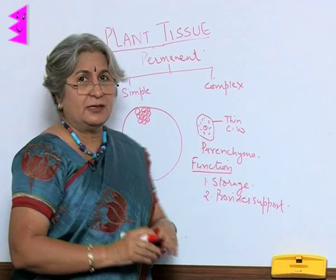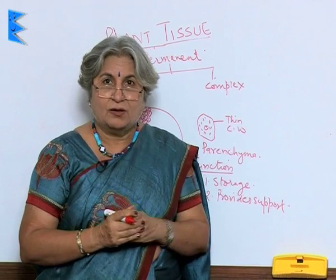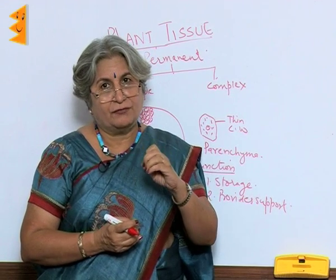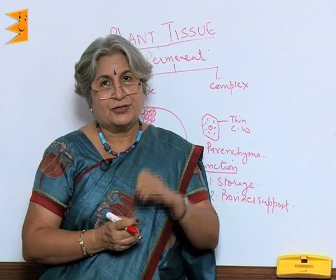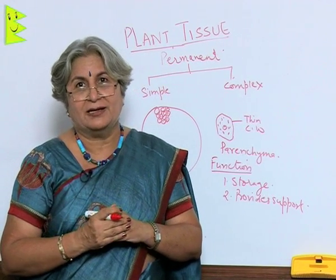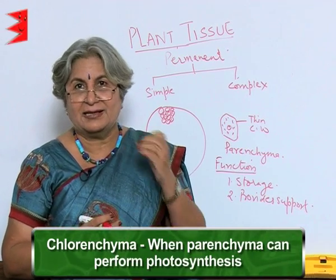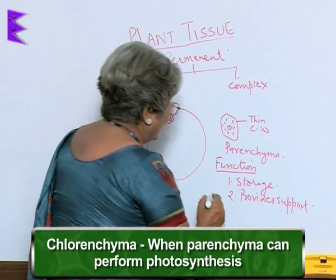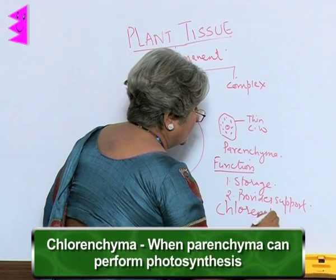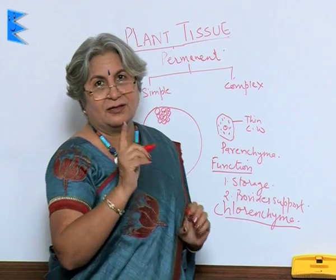Parenchyma has certain variations. In the leaves, what is required is the green colour, which means chlorophyll or the chloroplast. So if a parenchyma cell has chloroplasts in it, then it is able to perform photosynthesis, and in that case it is called chlorenchyma. So the kind of tissue present in leaves is chlorenchyma.